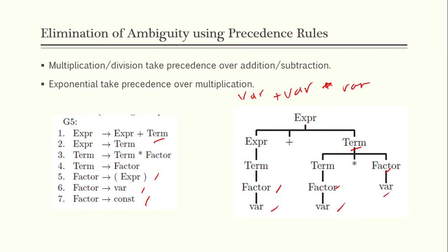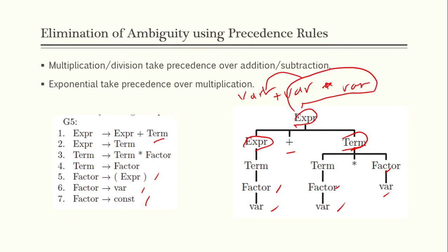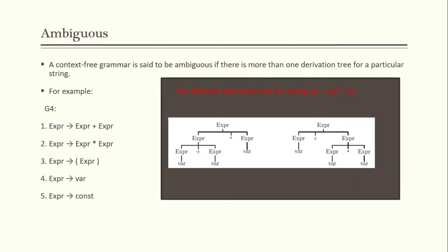This means that to evaluate the expression, we first compute 'term times factor', which is 'var times var', and then add it to the variable. This is quite different from the wrong derivation where 'expression times expression' would require doing 'var plus var' first, and only then multiplying it with 'var'.